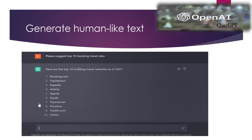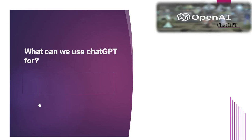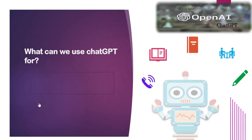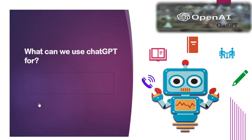Overall, ChatGPT's ability to generate human-like text and understand context makes it a valuable tool for developers and researchers in the field of AI. We'll see more examples in upcoming slides. ChatGPT can be used in a variety of ways to help people in their lives. The first use case is task automation — ChatGPT can be used to create automation tools like chatbots that can assist with customer surveys, answering frequently asked questions, and providing information.